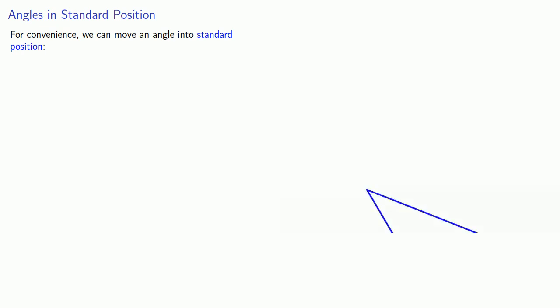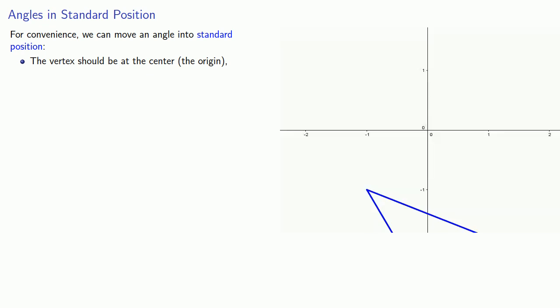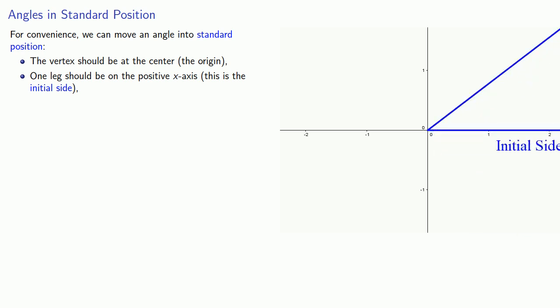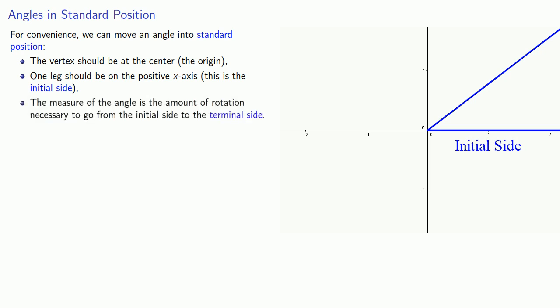But what fun would that be? For convenience, we can move any angle into standard position. That requires the following: first, the vertex should be at the center — the origin. So we'll throw down our coordinate axes and move our vertex to the origin. One leg should be on the positive x-axis; we'll call this the initial side.